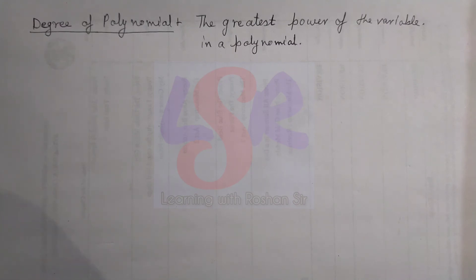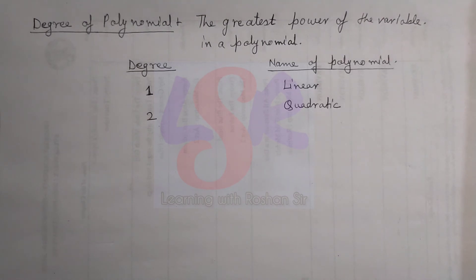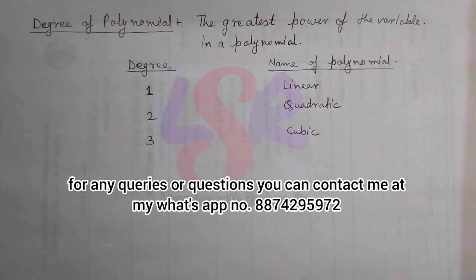With different names as: for degree 1, we call them linear polynomial; degree 2, quadratic polynomial; and degree 3, cubic polynomial.